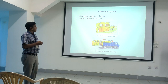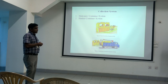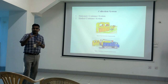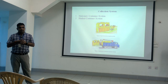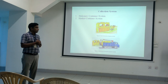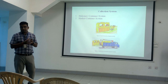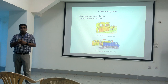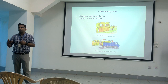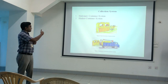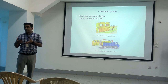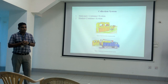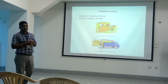The collection system has two types: stationary container system and hauled container system. In the stationary container system, containers are situated at prime locations of a household or colony; the containers remain fixed and solid waste is transferred from them to the truck. In the hauled container system, the entire container is lifted onto the truck and carried to the dumping yard. Each method has its own advantages and disadvantages.